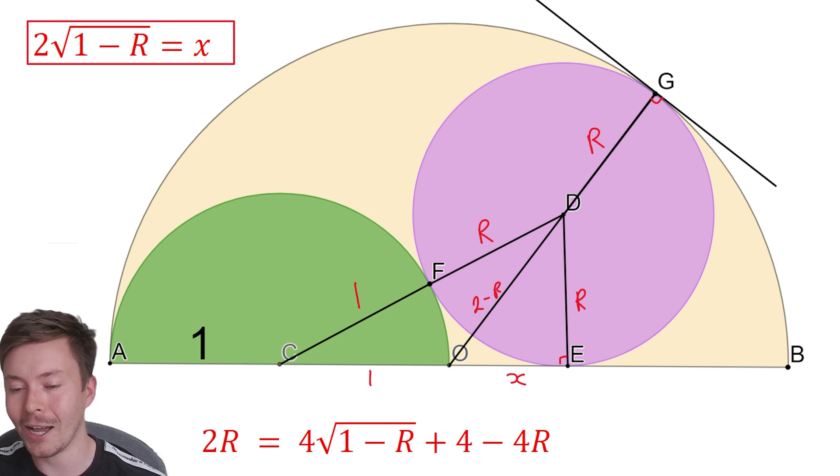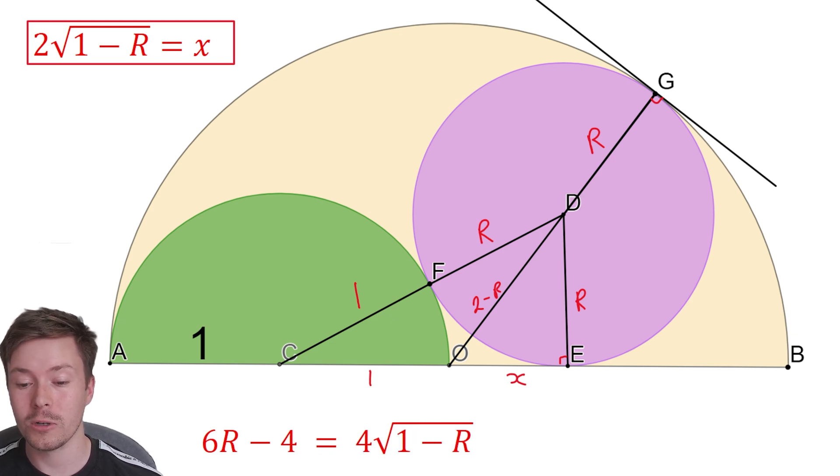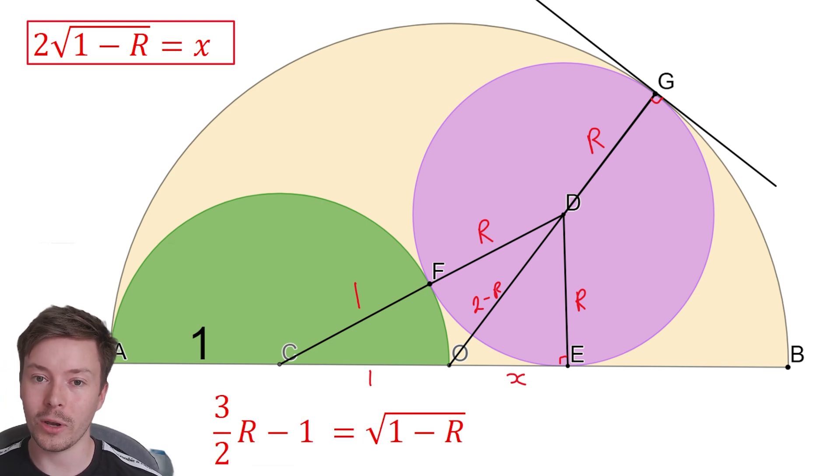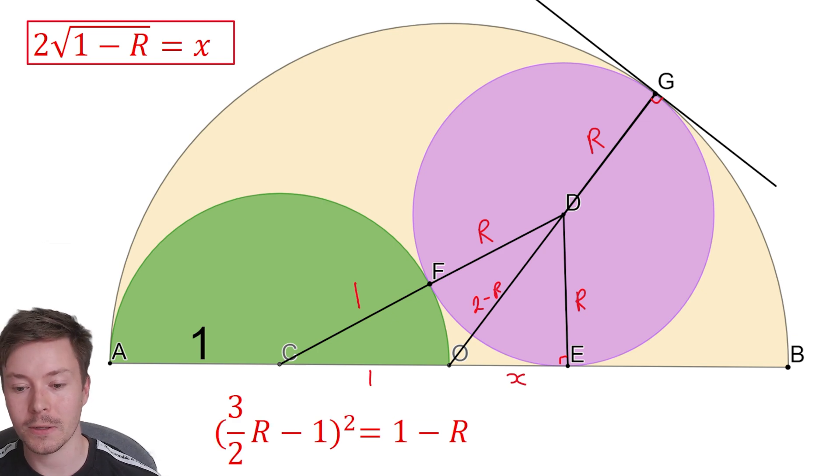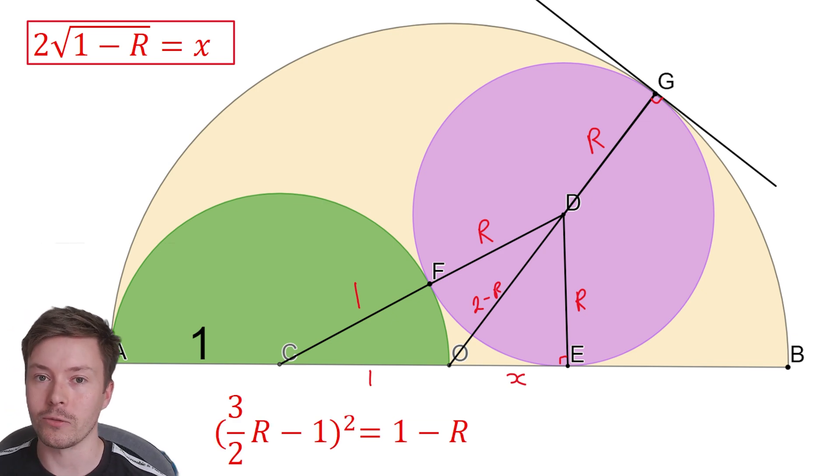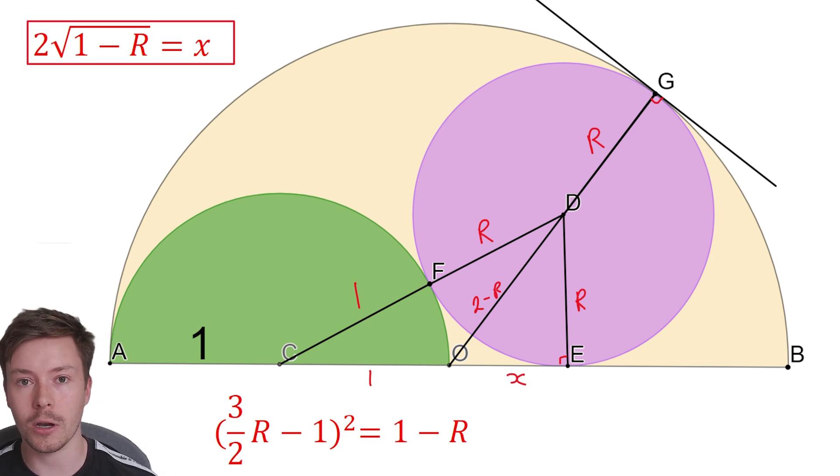Let's go through the motions and do that. We're going to add 4R to both sides, so 6R equals this. We're going to take away the 4, so 6R minus 4 equals this, and then we're going to divide by 4. 6 divided by 4 is equivalent to 3 over 2, and 4 divided by 4 equals 1, so we get 3 over 2R minus 1 equals square root 1 minus R. We're going to square both sides here, and we get 3 over 2R minus 1 all squared equals 1 minus R.